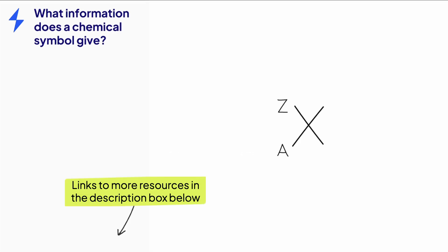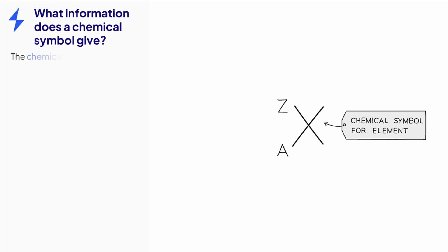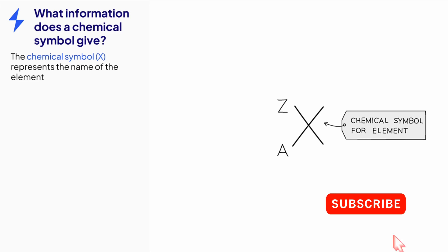A chemical symbol, as seen on the periodic table, gives detailed information about the element. The actual chemical symbol gives the name of the element. The letter X is used to represent a general element. If the letter X was replaced with H, we would be looking at hydrogen.